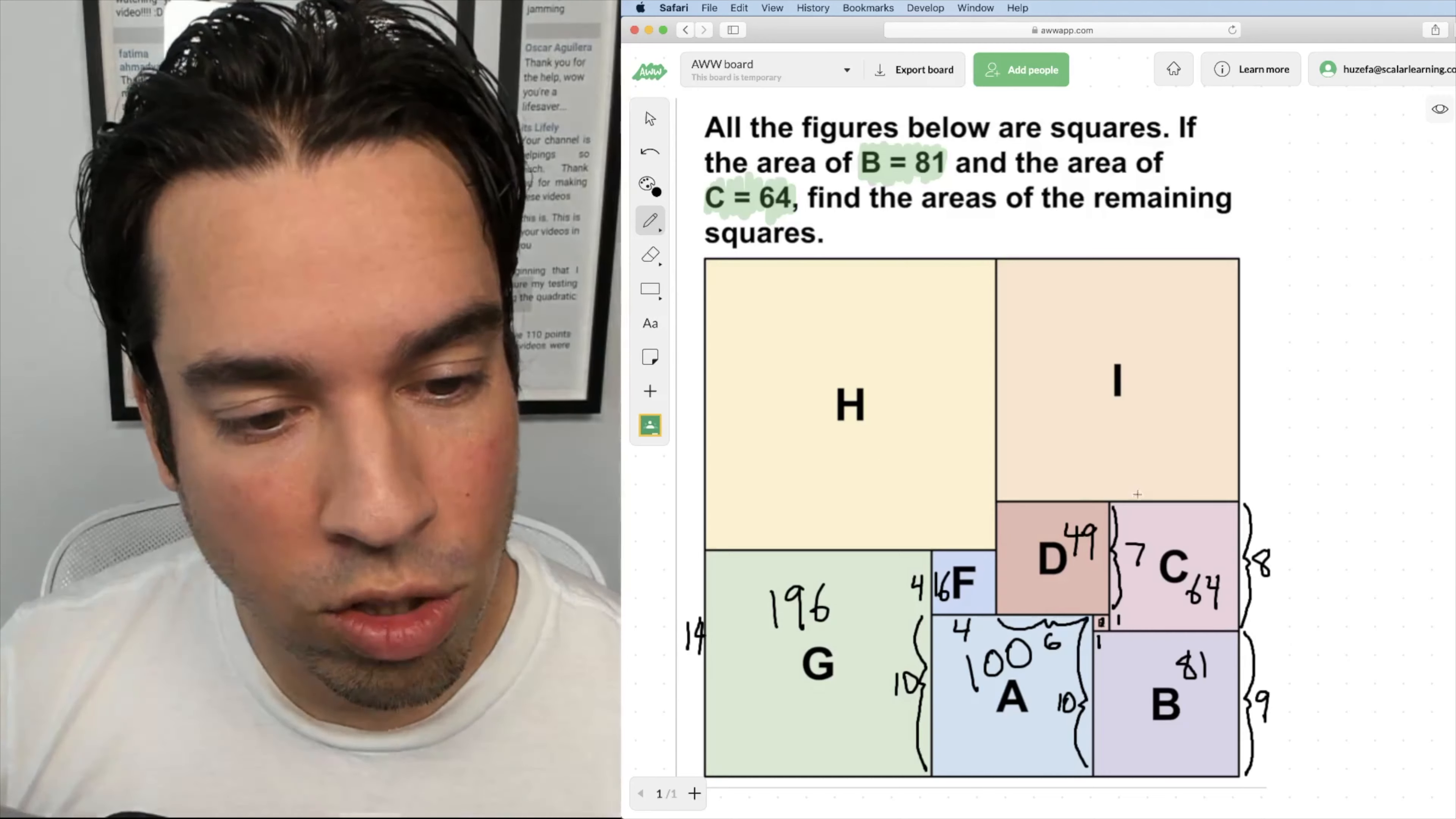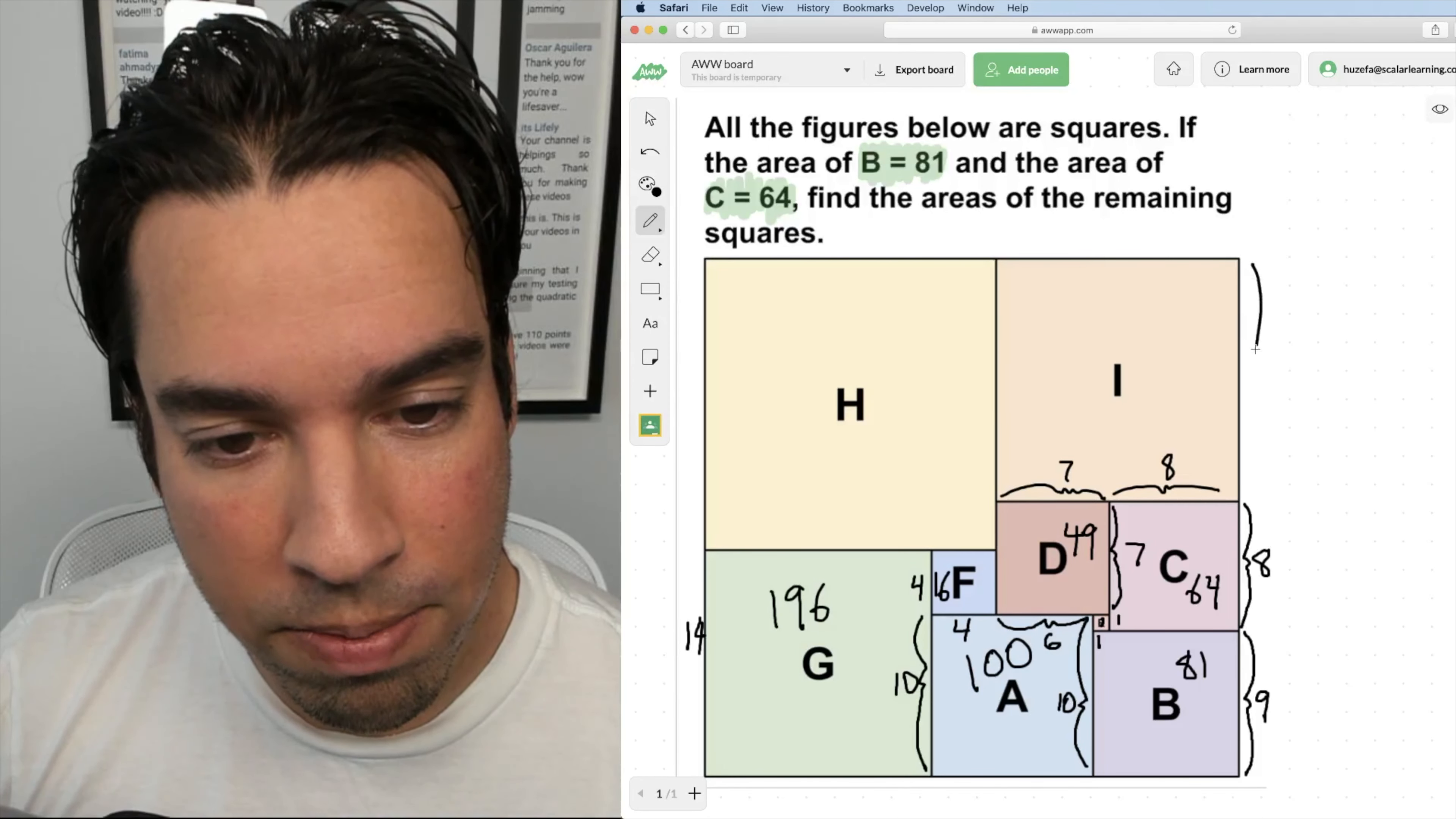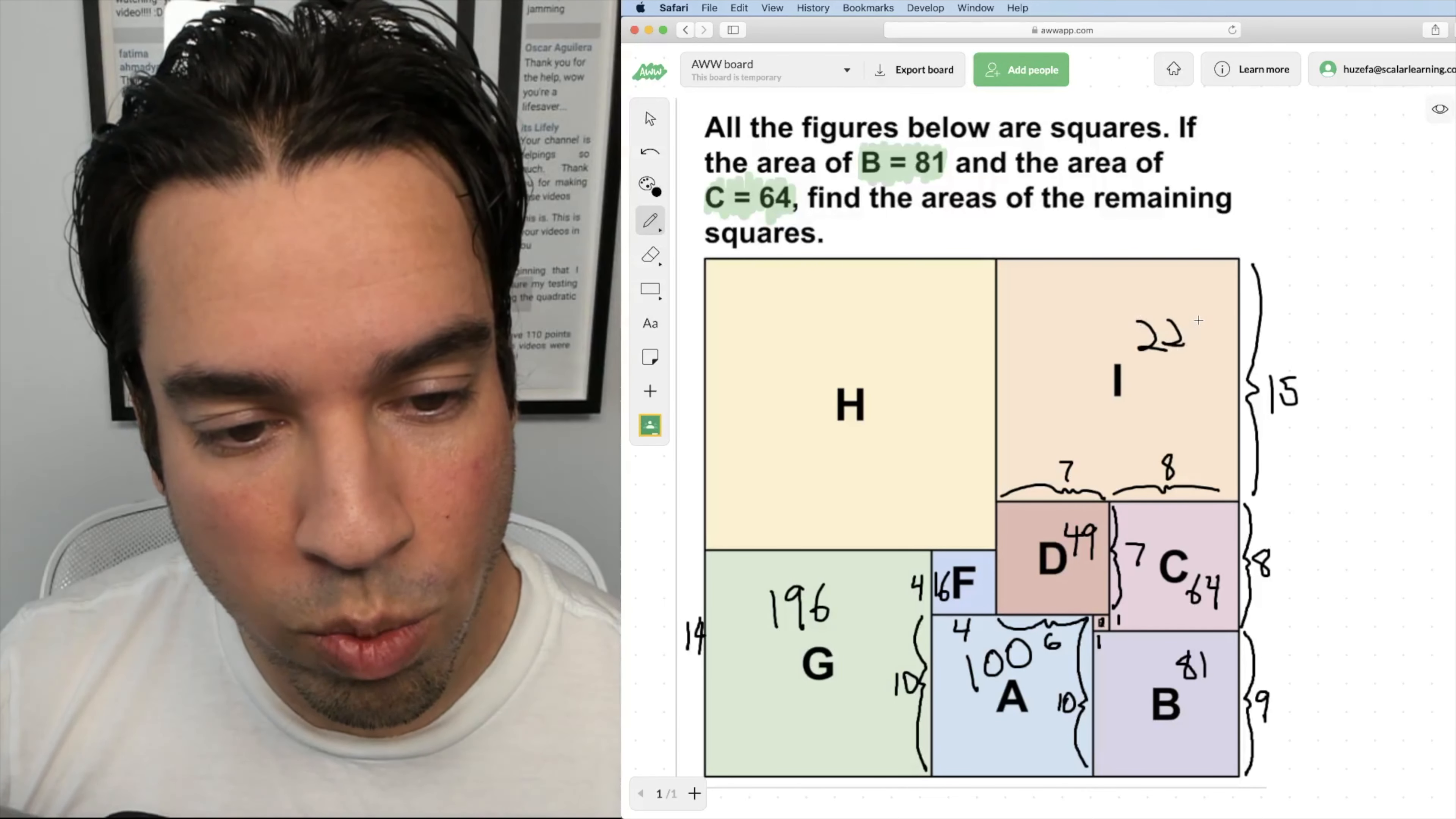Then we get to I. I'm going to jump back to I. I know that this length here is seven, this length here is eight, which means that I has a side length of 15, meaning that I has an area of 225.